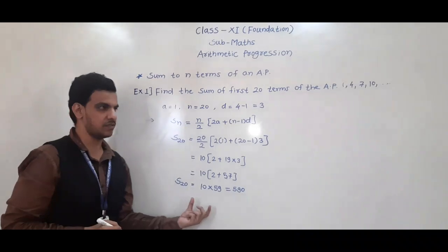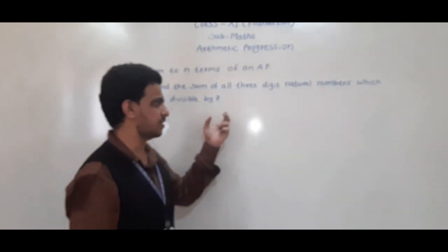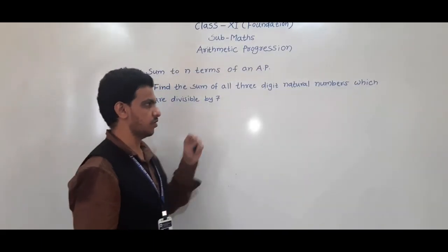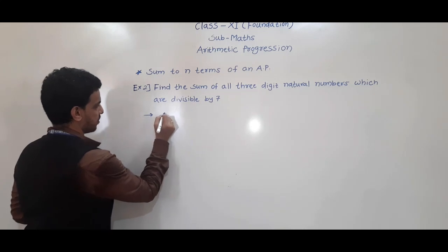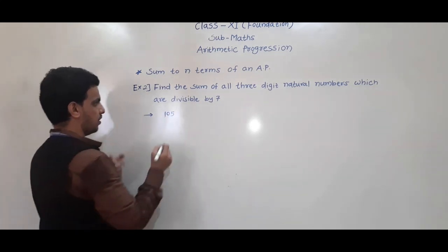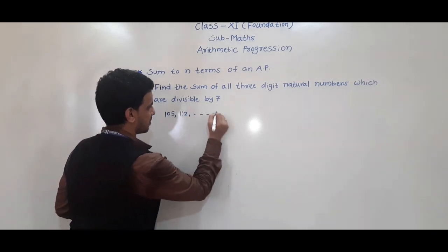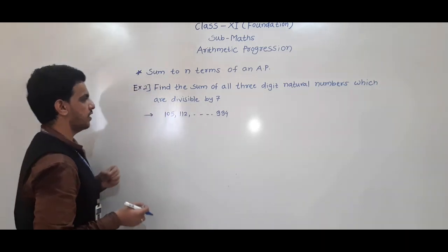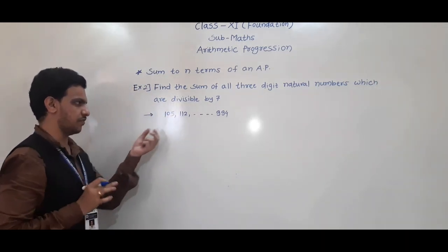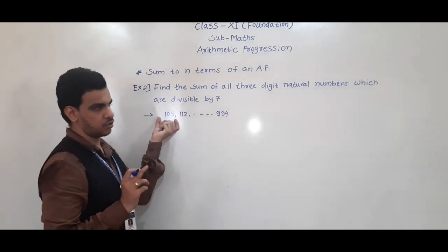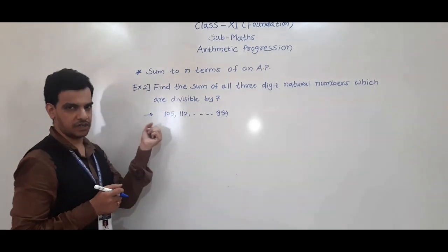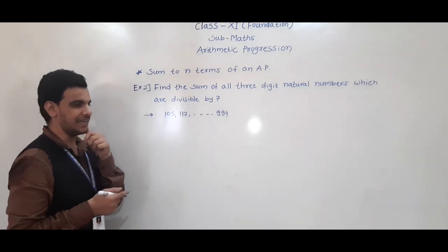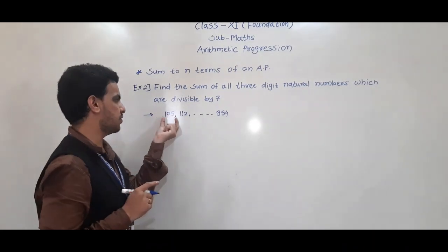Second example: find the sum of all three-digit natural numbers which are divisible by 7. First we find how many such terms there are. The first three-digit number divisible by 7 is 105. Dividing 100 by 7 gives remainder 2; subtracting 2 from 100 gives 98, and adding 7 gives 105.